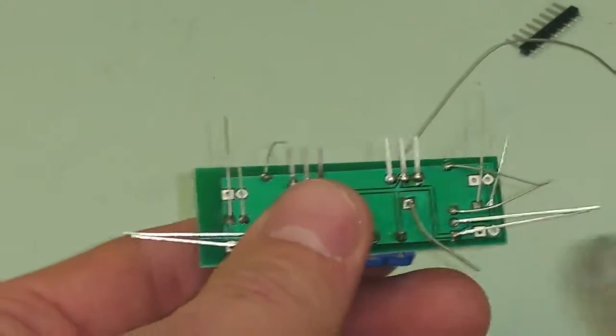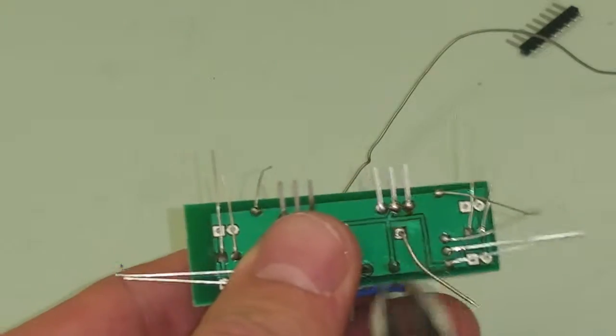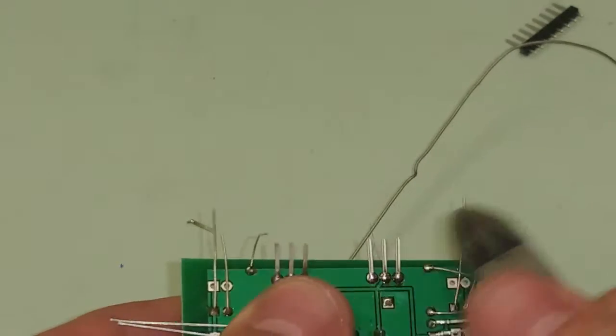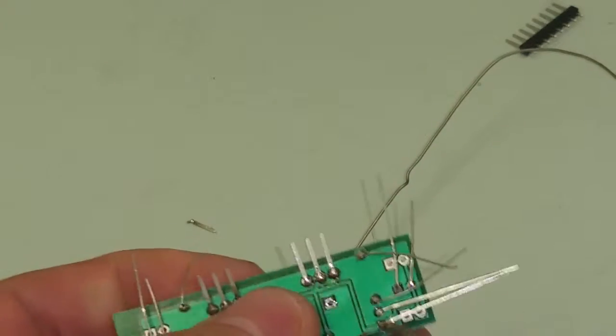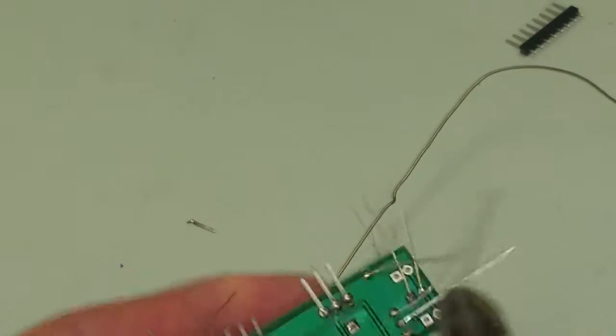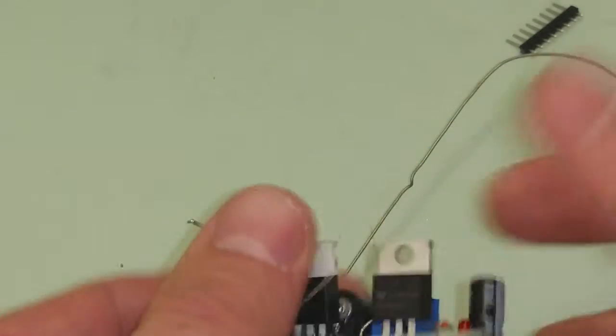So it's now populated. You can see, and what I'm going to do is flip it over. I'm just going to start clipping these off. They're extra. You can see it's nice and populated. It looks great.